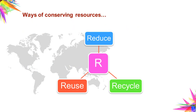Here are some of the ways of conserving resources — the 3 R's: reuse, reduce, and recycle. Reuse means we should use resources again and again. Reduce means we should reduce the use of resources. Recycle means materials like plastic, iron, and other important metals are recycled. In this way we can conserve our resources to some extent.